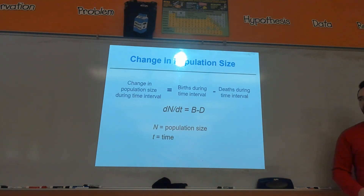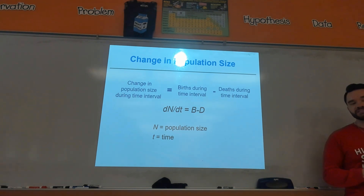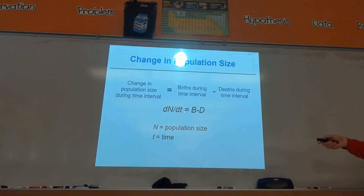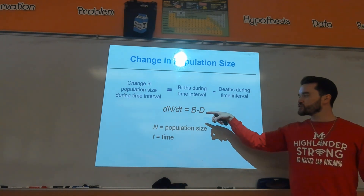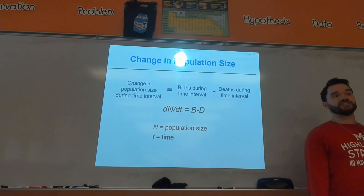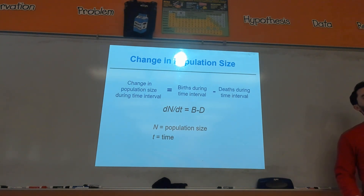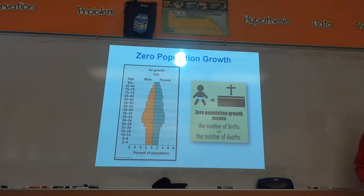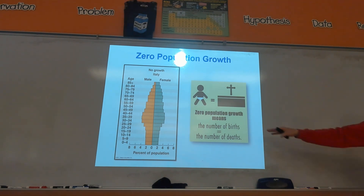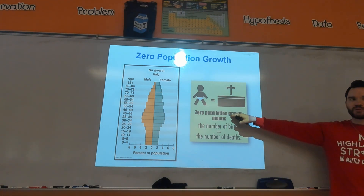Here are some formulas you need to know for population ecology. They're on your formula sheet so you don't need to memorize them. Population size is determined by births minus deaths — that gives you the change in the population. If you had 20 births and 20 deaths, the change in population is zero. A positive number means a growing population; a negative number means a shrinking population. Zero population growth is when births and deaths are equal.